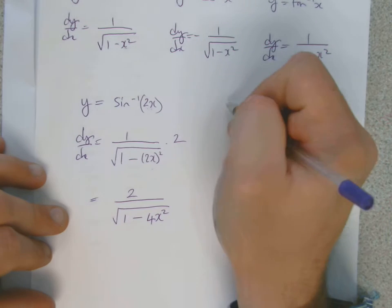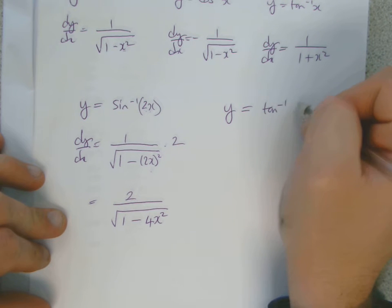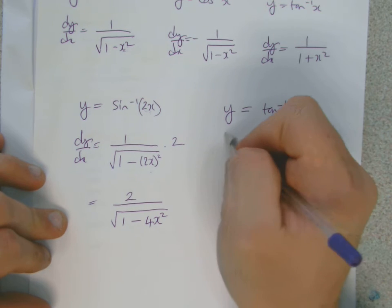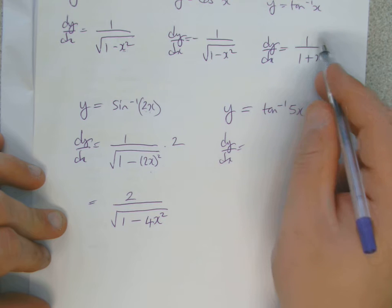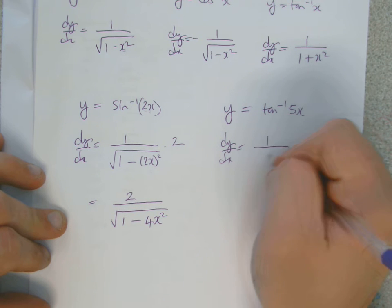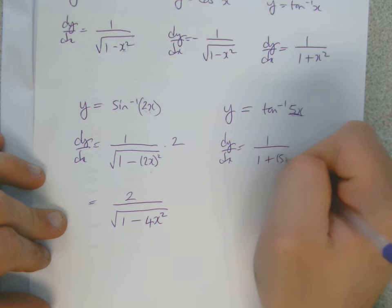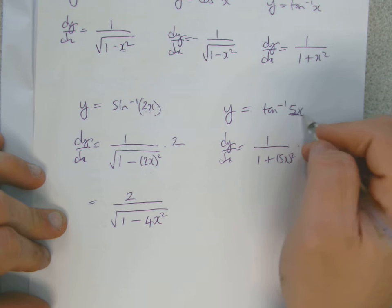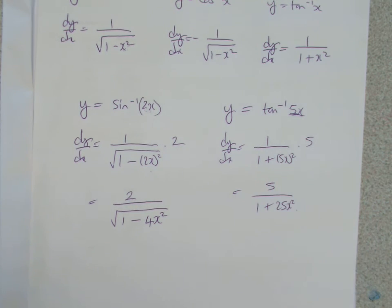Now if you've got the tan one — suppose you've got tan to the minus 1 of 5x — the tan one's easier; the result is a lot simpler. dy/dx: differentiate tan to the minus 1 and you get 1 over 1 plus x squared, but it'll be 5x in place of x, so it'll be 5x all squared. Then you times it by the derivative of the inside function, which is 5. So you get 5 over 1 plus 25x squared, and you're done.